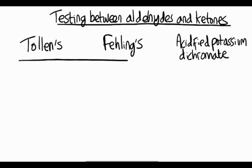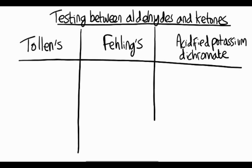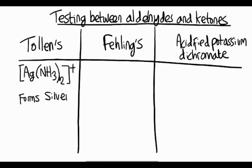So firstly, Tollens reagent. Tollens reagent is made up by mixing silver nitrate with ammonia, and we get a complex forming with two ammonia ligands and a silver 1 plus ion. And when we react that with an aldehyde, it forms a beautiful silver mirror on the inside of the test tube, and that shows the presence of an aldehyde. With a ketone, that won't happen.